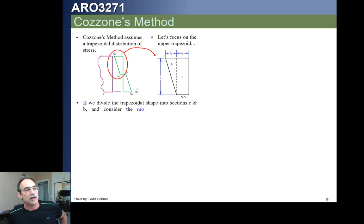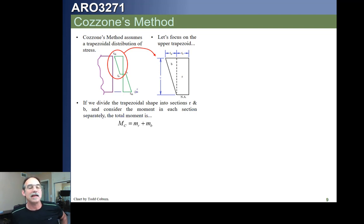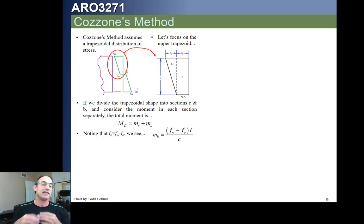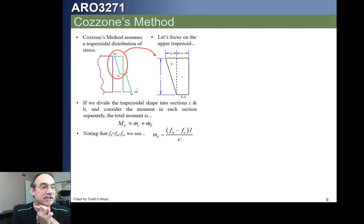We can see the two portions of the bending moment: the moment carried by the rectangle, m sub r, and the moment carried by the triangle, m sub b. Our Fb shown in the figure is just Fm minus Fo. The moment carried by the bending portion — since stress is just MC over I — we can rearrange to say m sub b is just (Fm minus Fo) times I over C.